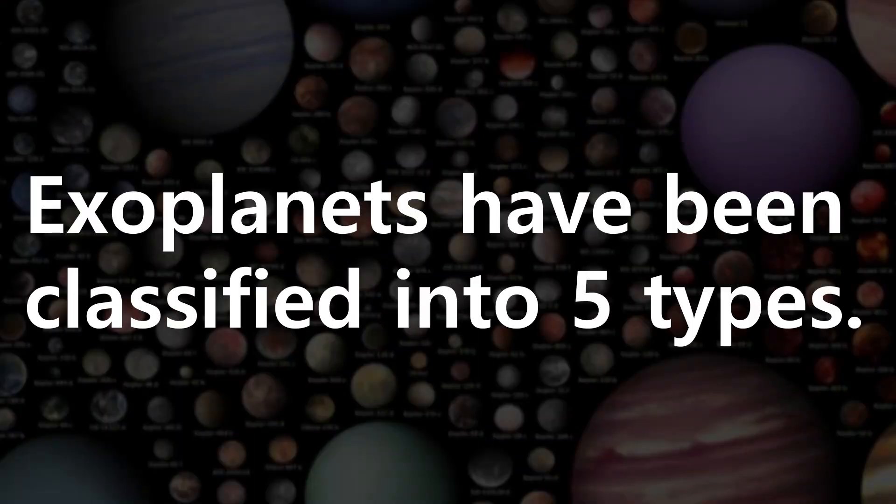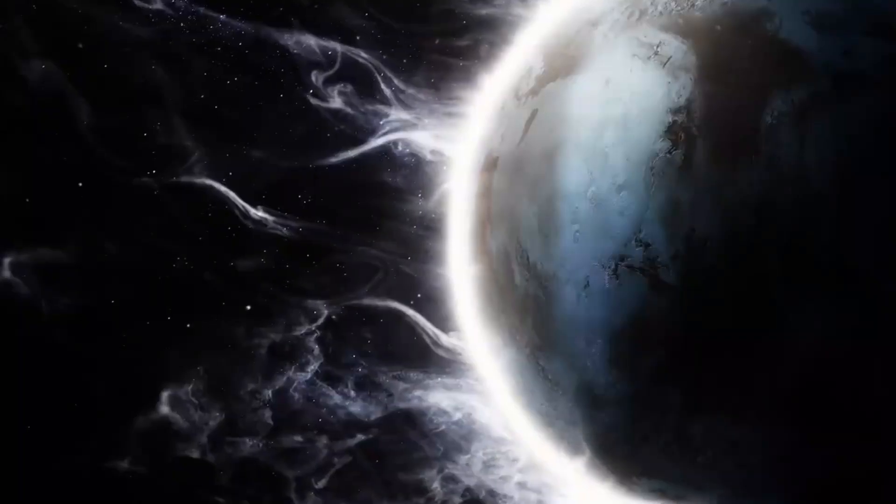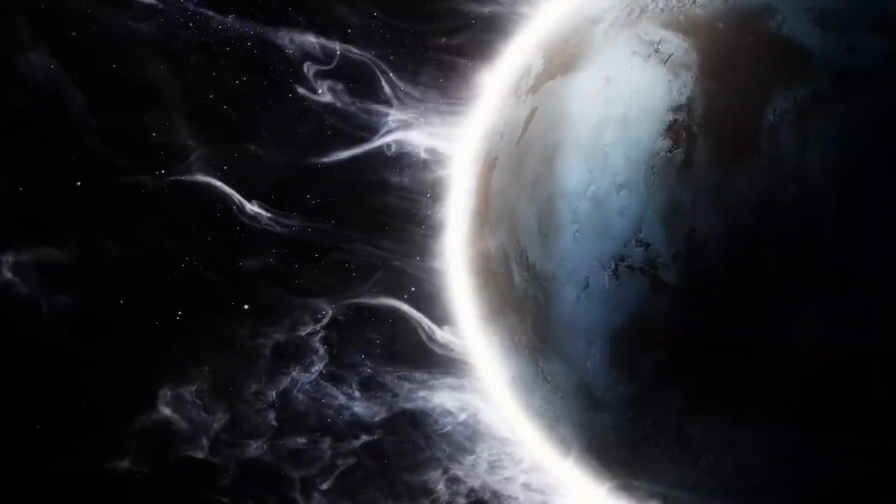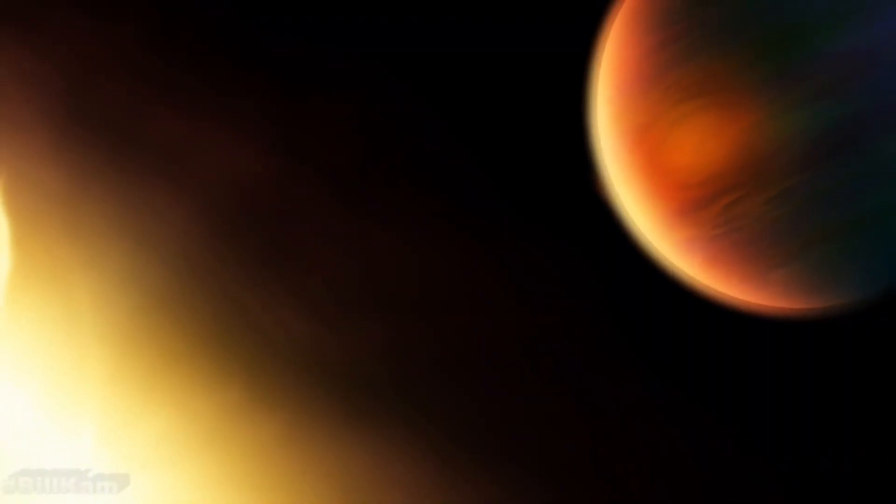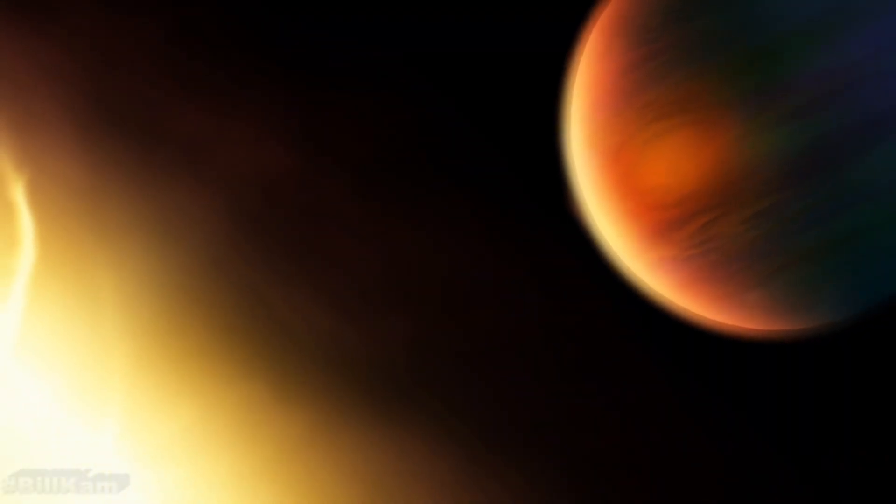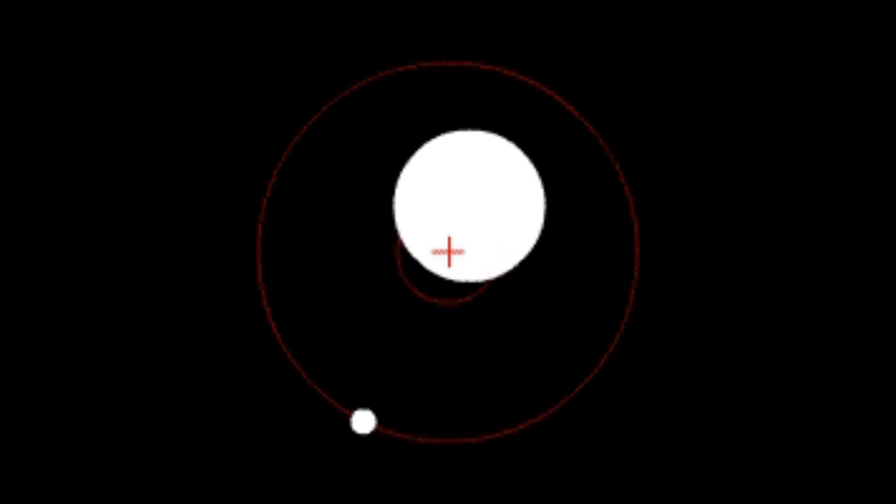The exoplanets have been classified into five main types: Hot Jupiters. These were among the first ones to get discovered because of their huge size and their close proximity to the star by which their star shows a wobbling moment.